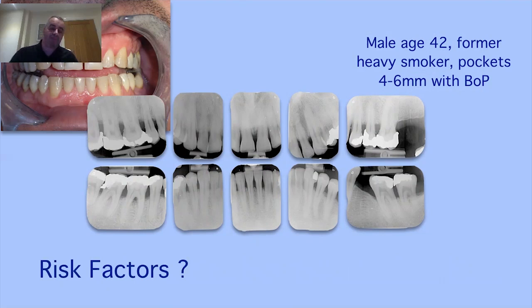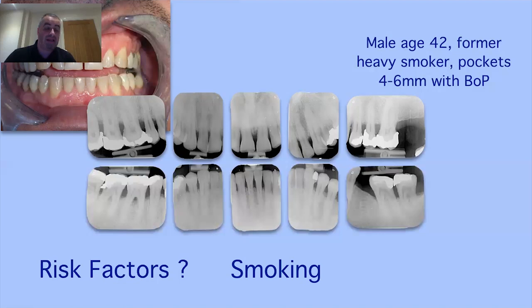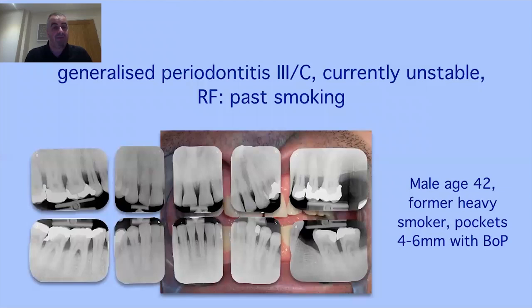For grading, looking at the worst-affected site, bone loss is approximately 50% of the root length. The patient is 42 years old. Because the worst bone loss (50%) is more than the patient's age, this patient is Grade C. Is the patient stable, in remission, or unstable? With deep pockets and bleeding on probing, this patient is clearly periodontally unstable. Risk factor profile: smoking — even though the patient recently stopped — has clearly contributed. The final diagnostic statement: generalized periodontitis Stage 3, Grade C, currently unstable, with smoking as a risk factor.